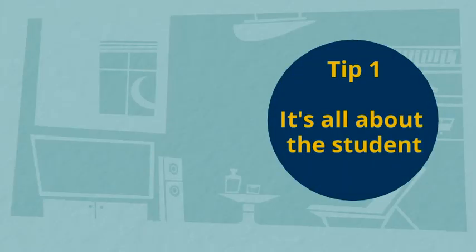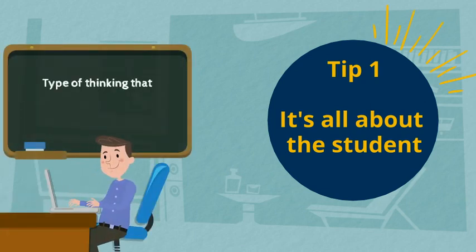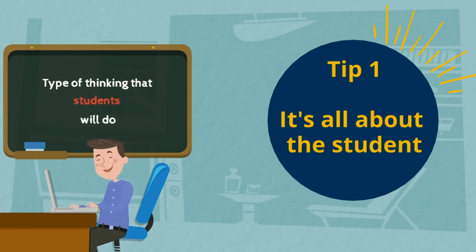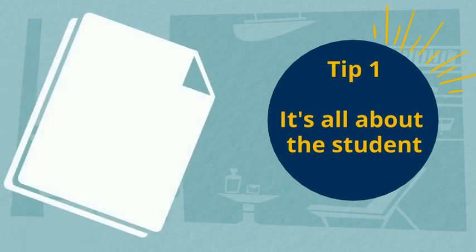Tip number one: it's all about the student. In their most basic form, learning outcomes describe the type of thinking that students will do, not what the teacher will do. Start your learning objectives with the phrase 'the students will' to help you get into the right frame of mind.